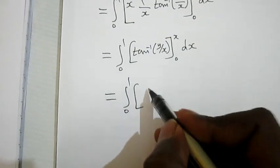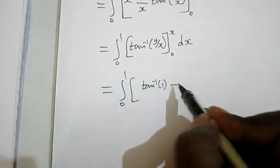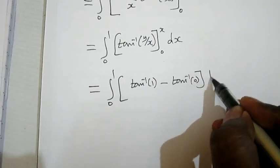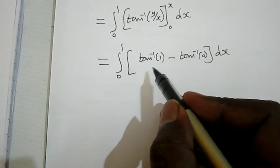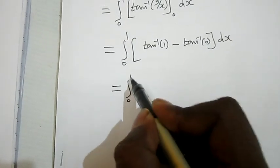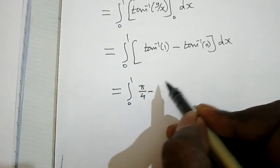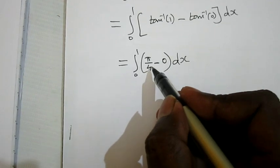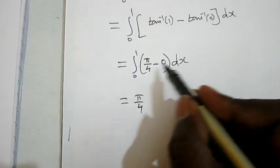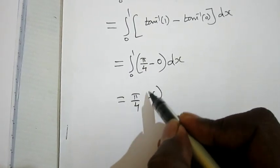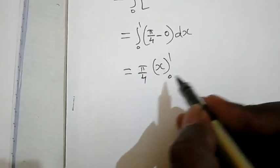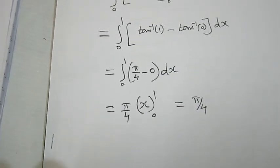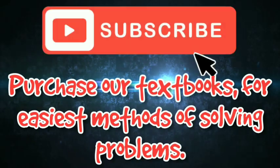Now substituting the limits: upper limit gives tan⁻¹(x/x) = tan⁻¹(1), and the lower limit gives tan⁻¹(0). So this becomes integral from 0 to 1 of (π/4 minus 0) dx. Since π/4 is a constant, it comes outside: (π/4) times x from 0 to 1 gives the final answer of π/4.